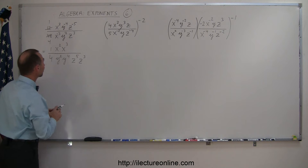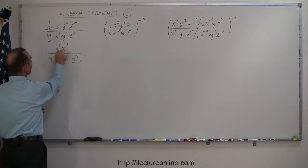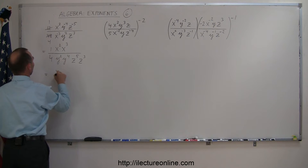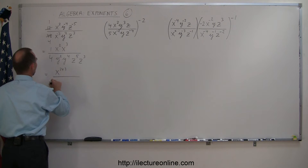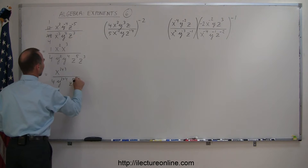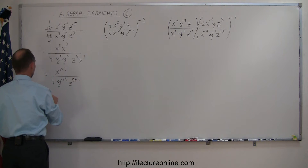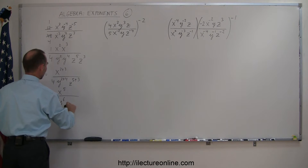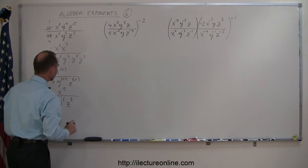Whenever the bases are the same and we multiply, we simply add the exponents together. So this becomes x to the 2 plus 3, divided by 4 times y to the 2 plus 4, and z to the 5 plus 3. Adding them together, we get x⁵ divided by 4, y⁶, z⁸, and we're done.